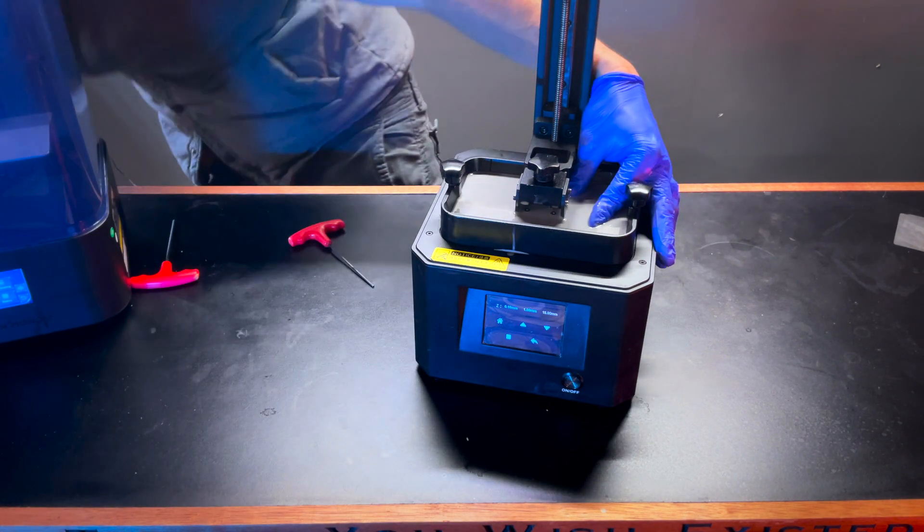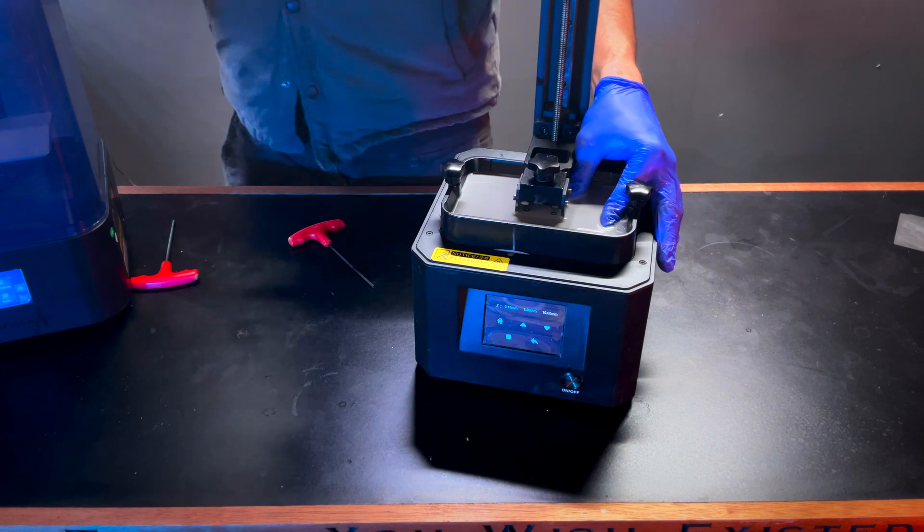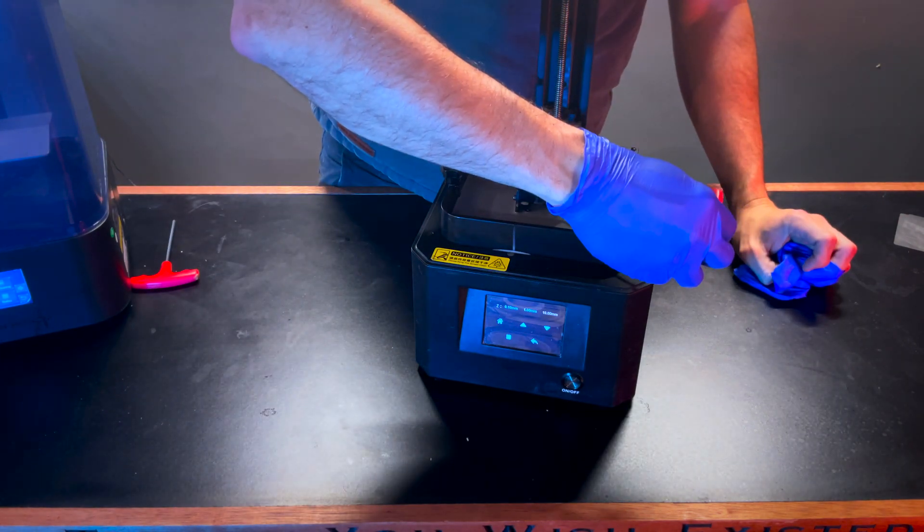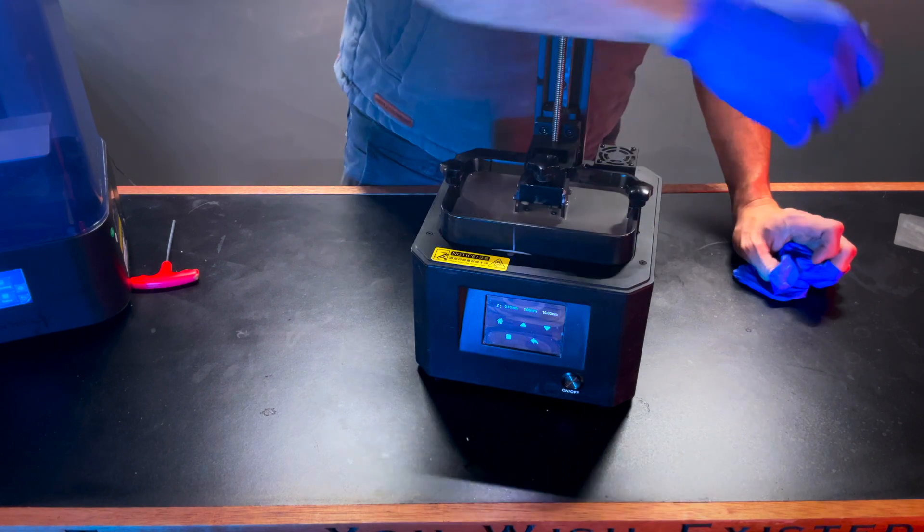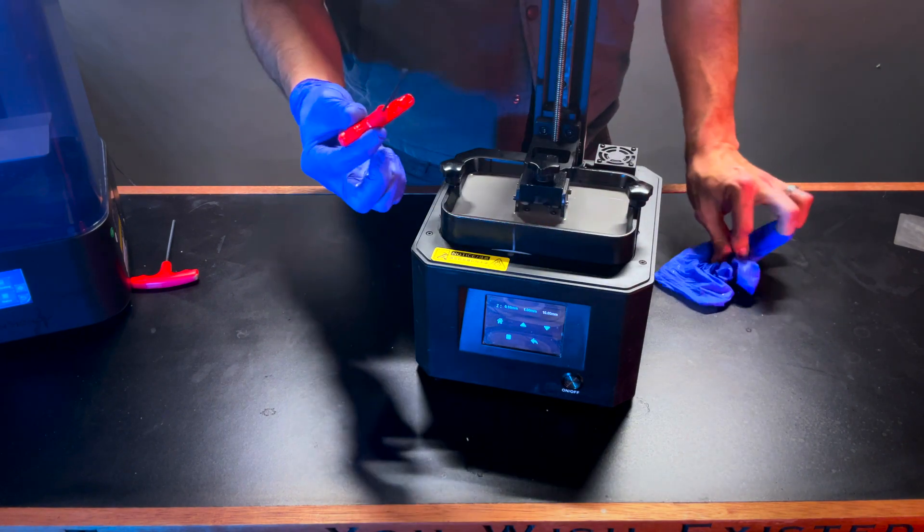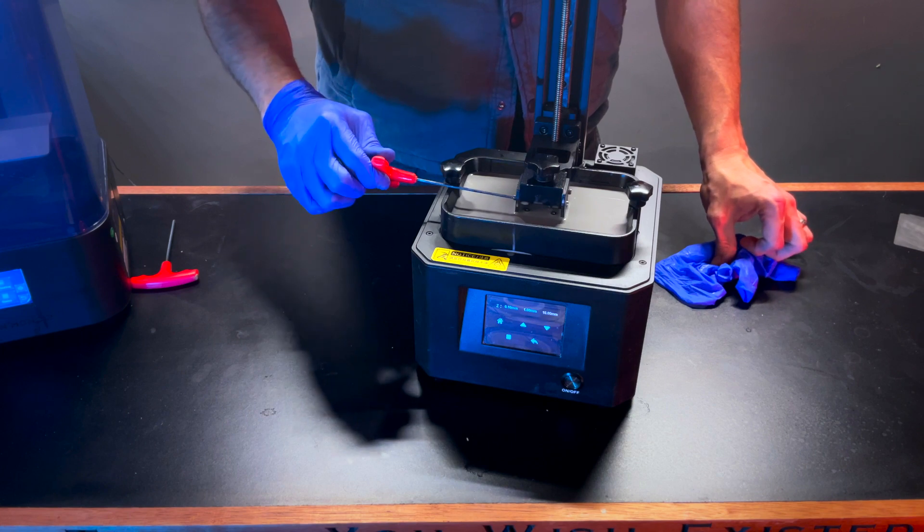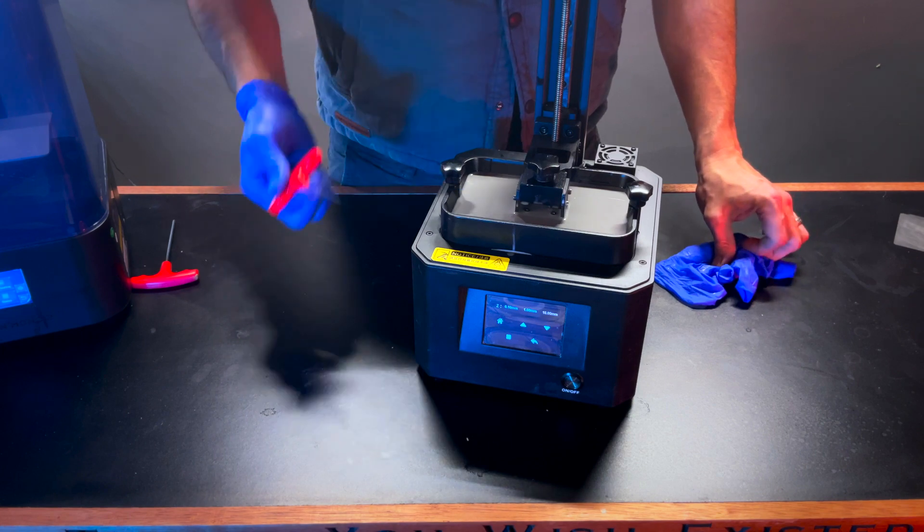I'm going to grab a paper towel and go ahead and snug the last two down here. And these long handle Allen keys are great for this because you can simply go from the side of your resin vat here and it will reach long enough. Which is great.